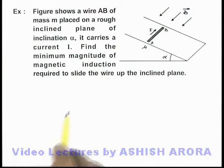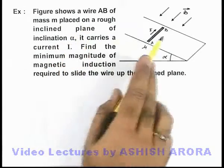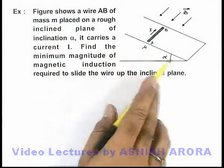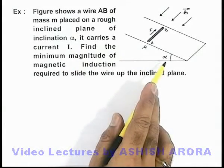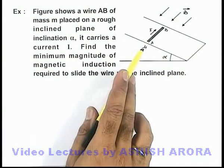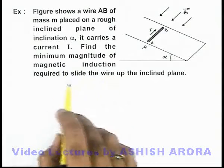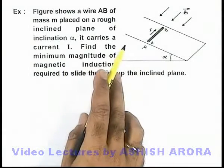In this example, we are given that the figure shows a wire AB of mass m placed on a rough inclined plane of inclination α. It carries a current I, and we are required to find the minimum magnitude of magnetic induction required to slide the wire up the inclined plane.